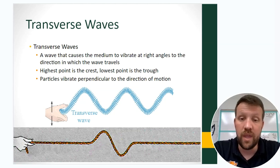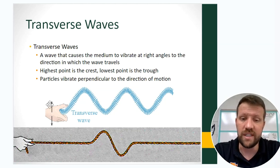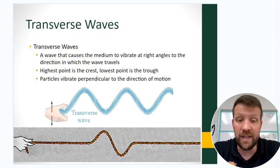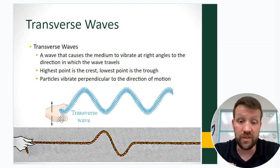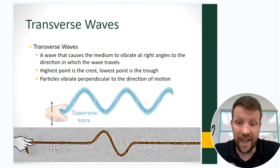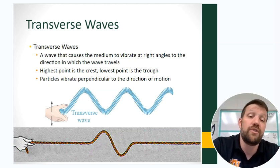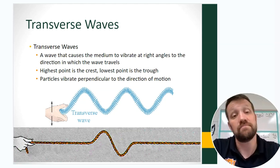Two types of waves. First, transverse waves — that's what we were just looking at with the rope or spring. Any wave where motion is up and down to send energy left and right causes the medium to vibrate at right angles to the direction the wave travels. The wave travels right to left, but the hand moves up and down to make it. The highest point is the crest, the lowest is the trough, and those particles vibrate perpendicular to the direction of motion.